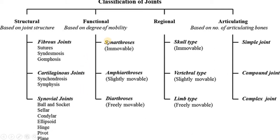Functional classification is based on how much movement a joint allows. They are divided into three types: synarthrosis, which is immovable; amphiarthrosis, which allows slight movement; and diarthrosis, which is freely movable. For example, the skull type is immovable, the vertebral column allows slight movement, and limb joints are freely movable.